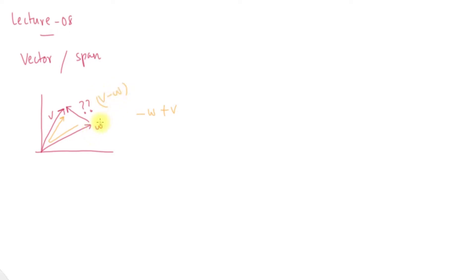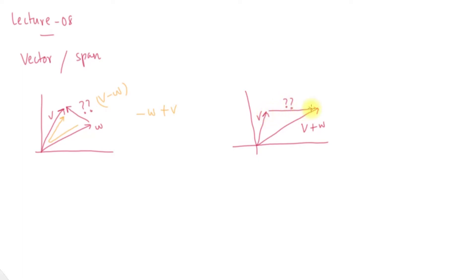Now I will go to the tail-head. For example, this is v. This is v plus w. Now this is a vector. As usual, we will go to the tail-head. The tail-head is a root. If we go to the opposite v, then we go to the tail-head. This is v plus w. This is a simple concept.